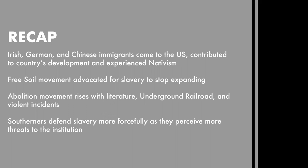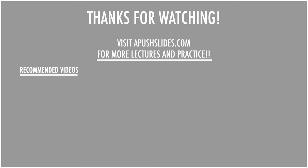That is it for this lecture. Let's go through the recap. Irish, German, and Chinese immigrants came to the U.S., contributed to the country's development, and experienced nativism. The free soil movement advocated for slavery to stop expanding. Abolitionist movements rose with literature, the Underground Railroad, and violent incidents. And finally, Southerners defended slavery more forcefully as they perceived more threats to the institution. Thank you for watching.